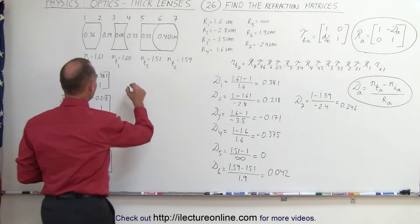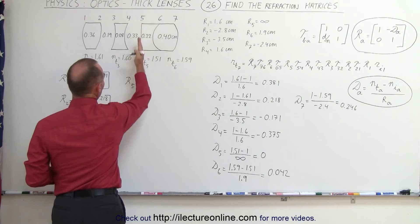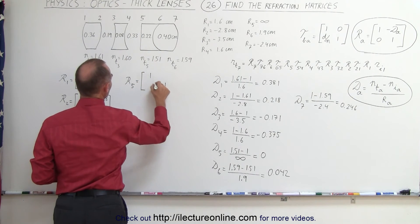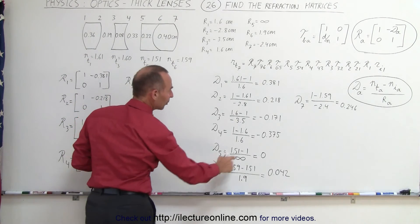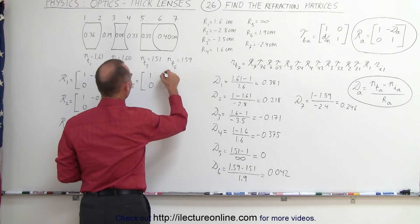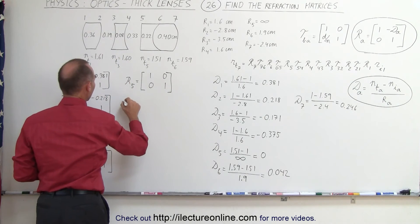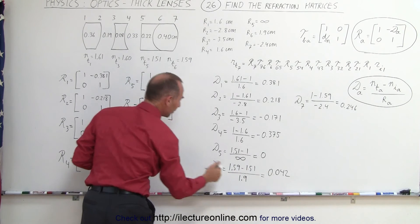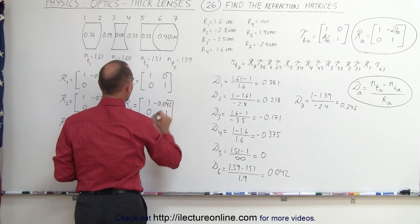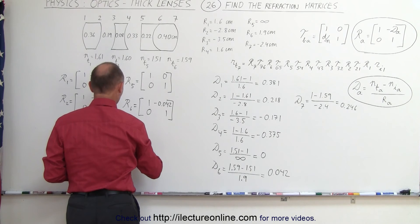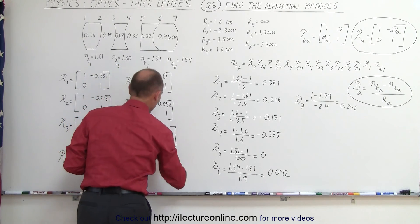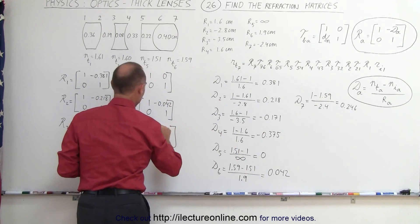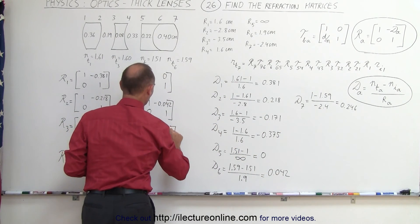Okay, next, R5. That's across this boundary right here. Notice that there's no curvature there. So what do we end up with? 1, 1, 0, and R5 would be D5, that would be 0. And then we have R6, 1, 1, 0, and the negative of this number, which is negative 0.042. And finally, the seventh refracting matrix, again 1, 1, 0, and the negative of that number, which would be negative 0.246.